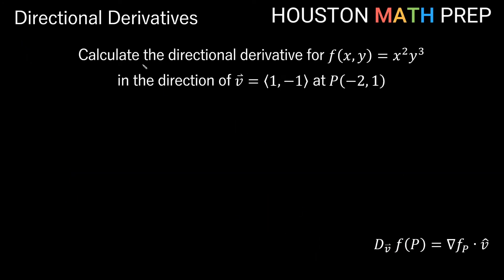We're going to work some examples now. We want to calculate the directional derivative for the function x squared y cubed in the direction of the vector (1, -1) at the point (-2, 1). Our formula is: the directional derivative in the direction of v at point p equals the gradient of f evaluated at p, dot product with v-hat. So let's first find our gradient ∇f. Remember ∇f is the vector function with components (∂f/∂x, ∂f/∂y).